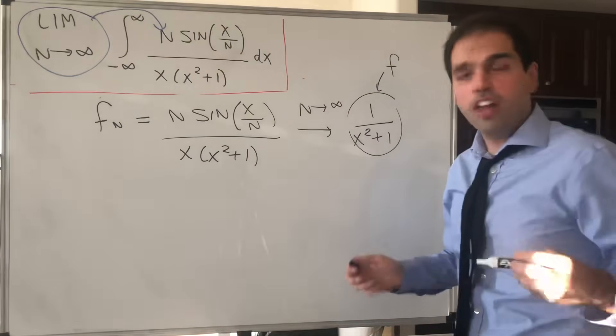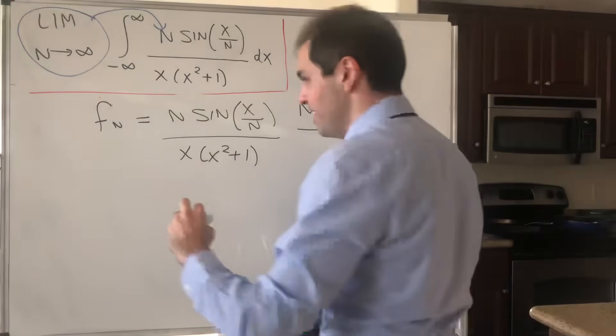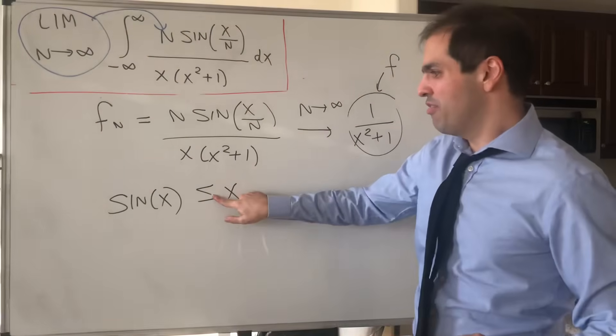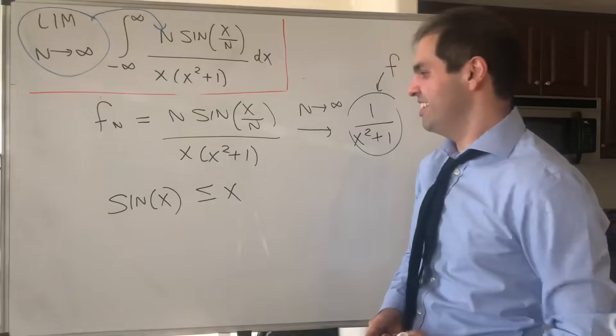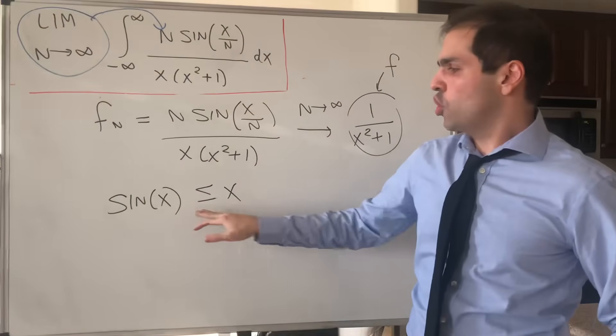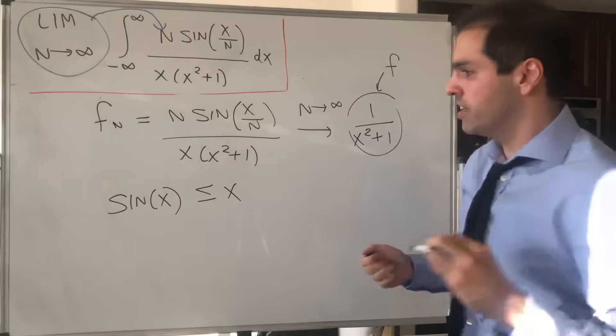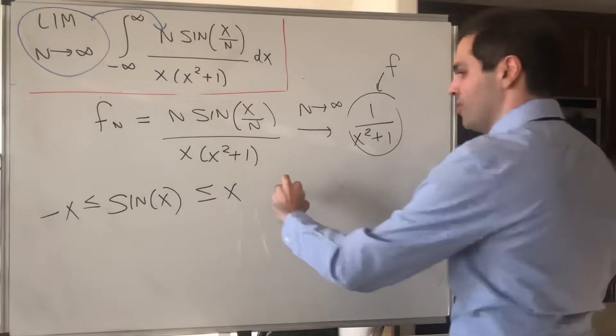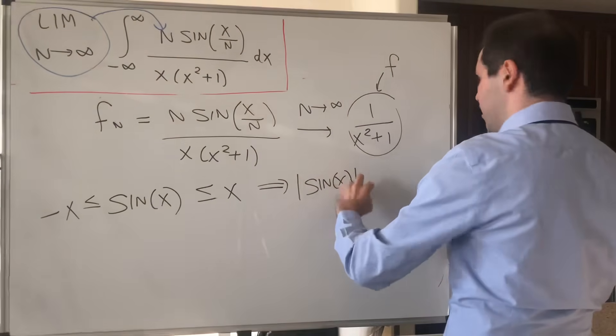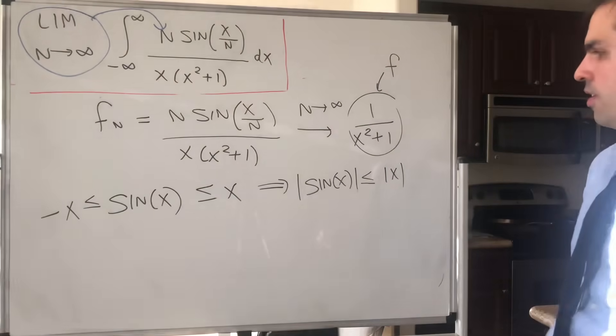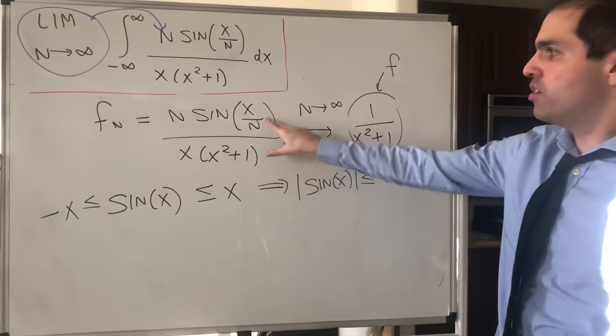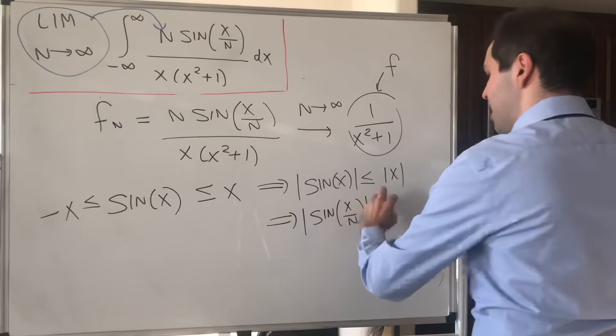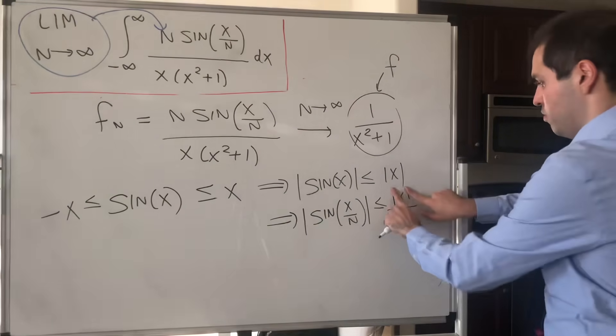But it turns out this is not very hard, because remember the following identity. Sine of x is less than or equal to x. So for some people, you put equal, but not on this channel. And this you can just show by taking the difference and taking the derivatives. And moreover, you also get that sine of x is less than or equal to x. So in particular, absolute value of sine of x is less than or equal to absolute value of x. And why is this useful? Because you can do the same thing with x over n, and you get absolute value of sine of x over n is less than or equal to absolute value of x over n.